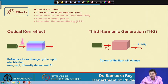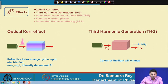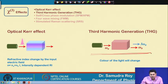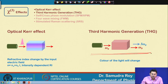Similar to second harmonic generation, third harmonic generation produces a new wave. If frequency omega-0 is launched, then omega-0 remains in the output field but another field at frequency 3*omega-0 also evolves. This is called third harmonic generation because the generated frequency is three times the fundamental frequency omega-0.